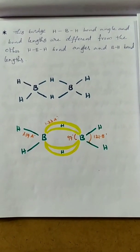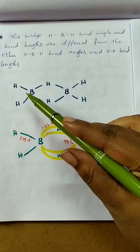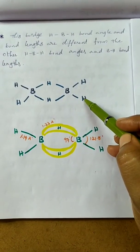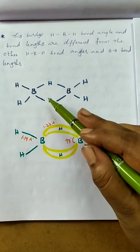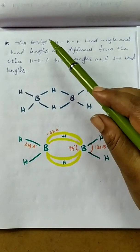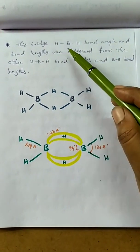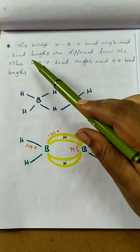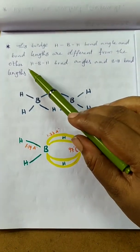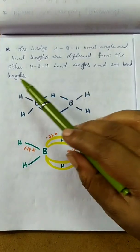This is the structure of diborane. The two boron atoms and the normal hydrogens lie in a plane, while the bridge bonds are different. The bridge H-B-H bond angle and bond lengths are different from the terminal H-B-H bond angles and B-H bond lengths.